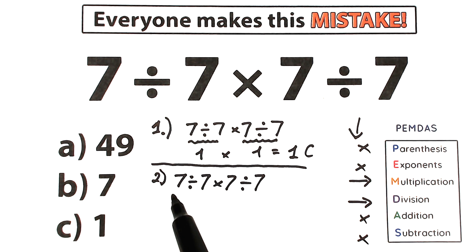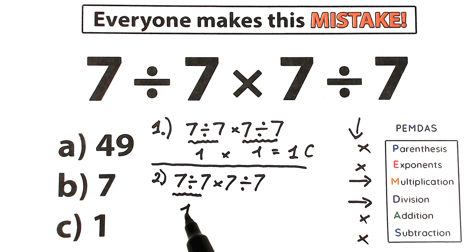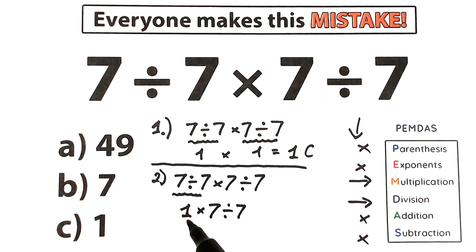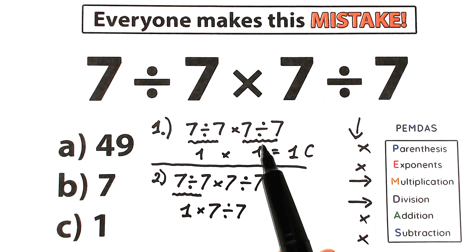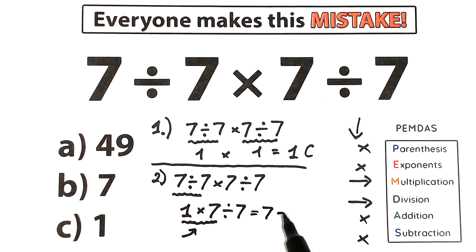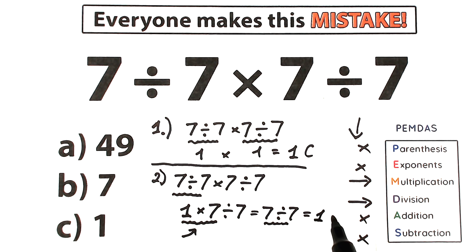Looking from left to right, the first sign is division. So 7 divided by 7 equals 1. Now we have 1 times 7 divided by 7. The next sign from left to right is multiplication, so 1 times 7 equals 7. Now we have 7 divided by 7, and dividing gives us 1 — option C.